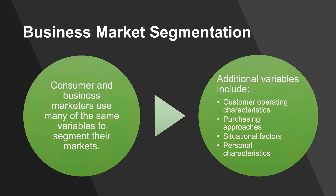Business markets are a little bit different but have mostly the same segmentation variables. They have overall large markets, but some additional variables include operating characteristics and purchasing approaches. For example, if I'm trying to sell to IBM and I'm a paper producer and I know they print a lot, I'm going to look at how they purchase, how they operate, and when they purchase — is it at the beginning of the year, middle of the year, during a budget process? And then I'll look at personal characteristics of that company and see if they match what I can offer and if it could be of value to them.